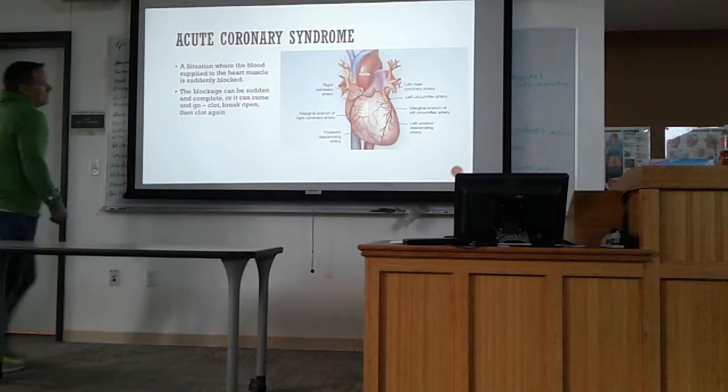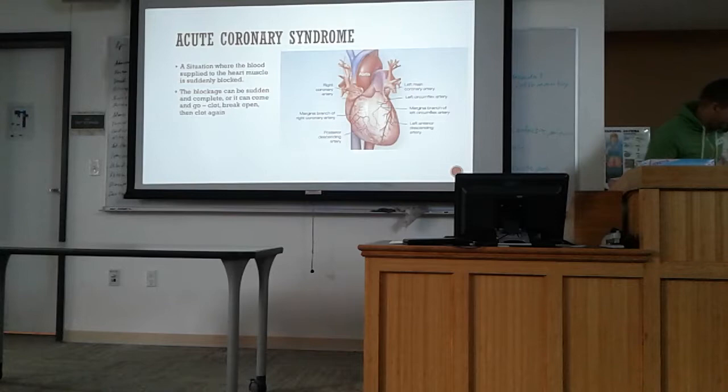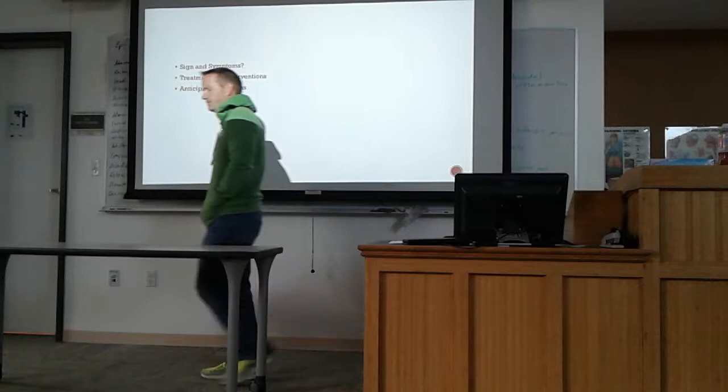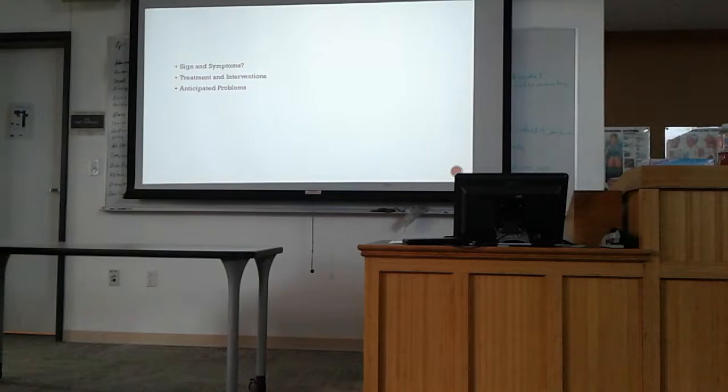So what else do we know about Acute Coronary Syndrome? Unstable, progressive. What signs and symptoms of an acute coronary syndrome? Crushing chest pain — that's a red flag for me for cardiac-related stuff. Radiation — commonly to which locations? Jaw, shoulder, left arm, back, abdomen.